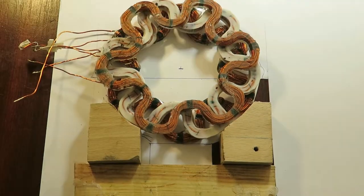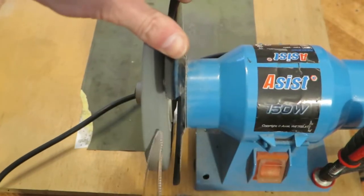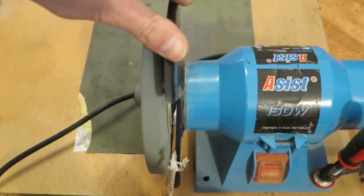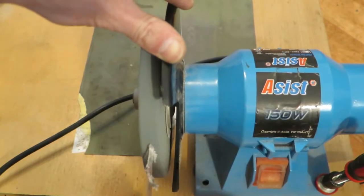Ok now we can tack weld these together. But first I must prepare my electrode. I found this for very cheap in Tesco supermarket.